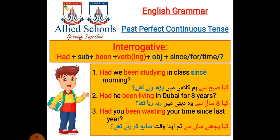The interrogative structure is: Had, first at the start of the sentence, then subject, then been plus verb-ing, object, and again since or for to show time. Don't forget to put a question mark at the end. Number one: Had we been studying in class since morning? Kya subha se hum class mein parh rahe thi? Number two: Had he been living in Dubai for eight years? Kya aat saal se wo Dubai mein rah raha tha? Number three: Had you been wasting your time since last year? Kya pichle saal se tum apna waqt zaya kar rahe thi?